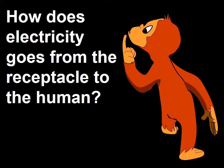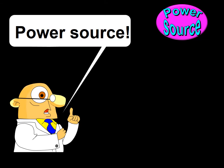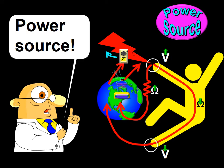The link between the wall electrical receptacle and the human getting the electric shock has not been established — a fact that has not gone unnoticed by the inquisitive monkey, who asks: how does electricity go from the receptacle to the human? The short answer is through a power source. Power source is the name used to refer to the missing link between human and electricity, indicated here by the blue arrow connecting with the red thunderbolt representing incoming electricity. So what are the power sources in a hospital setting?